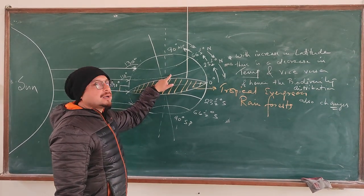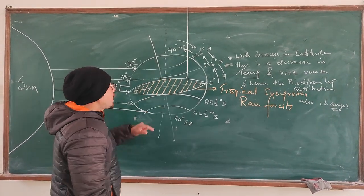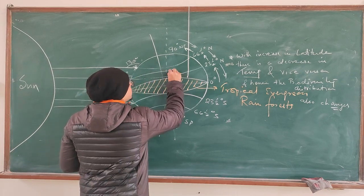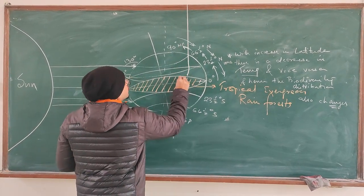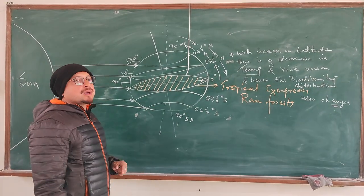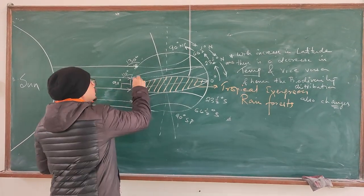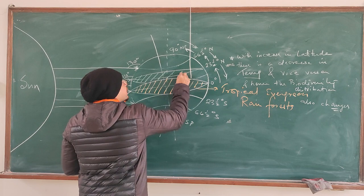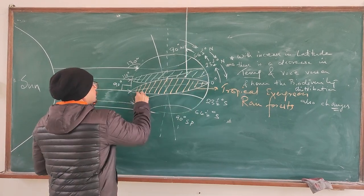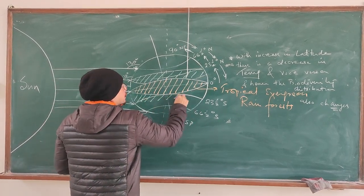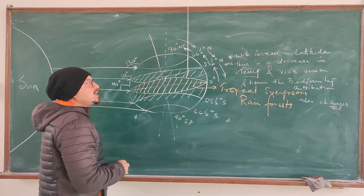Just above the equator, that means regions which are very close to the Tropic of Cancer and the Tropic of Capricorn, you see I am actually shading this with green, this entire region.